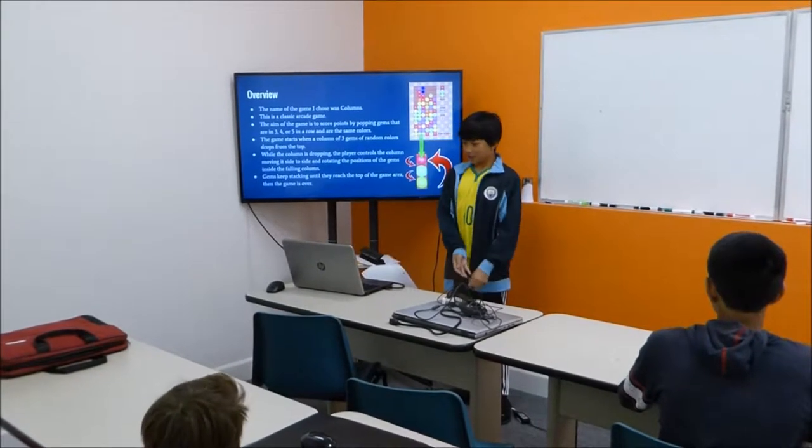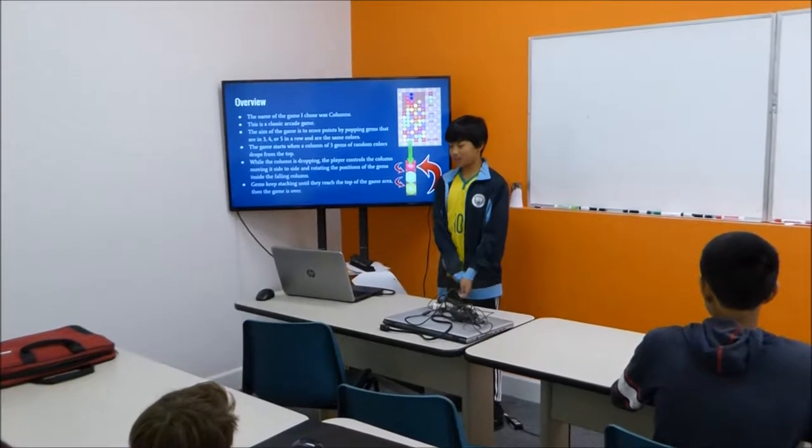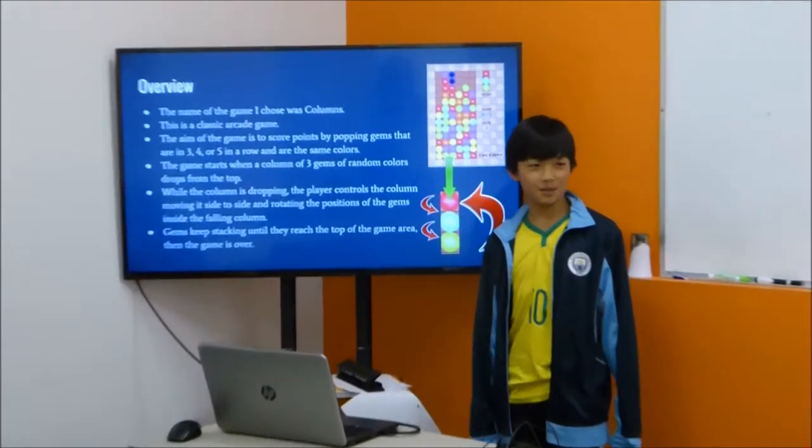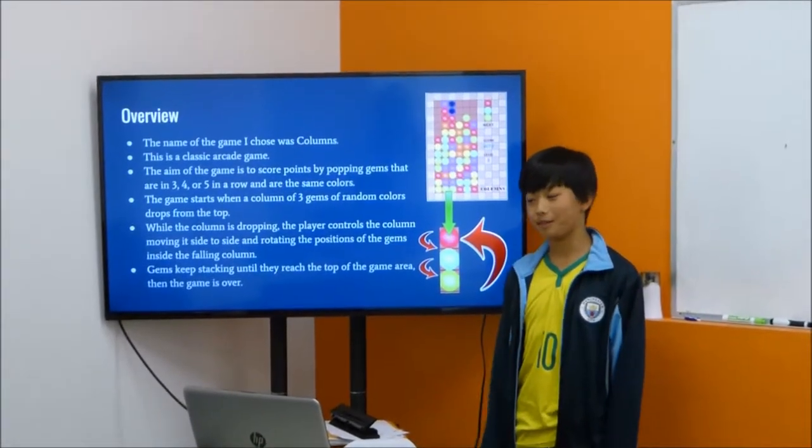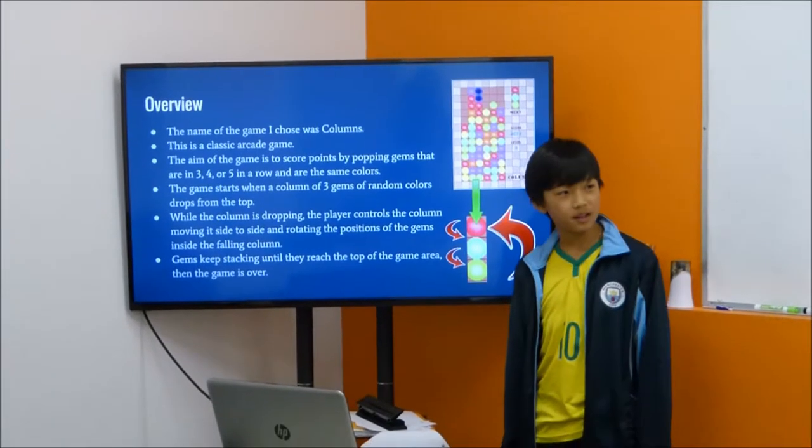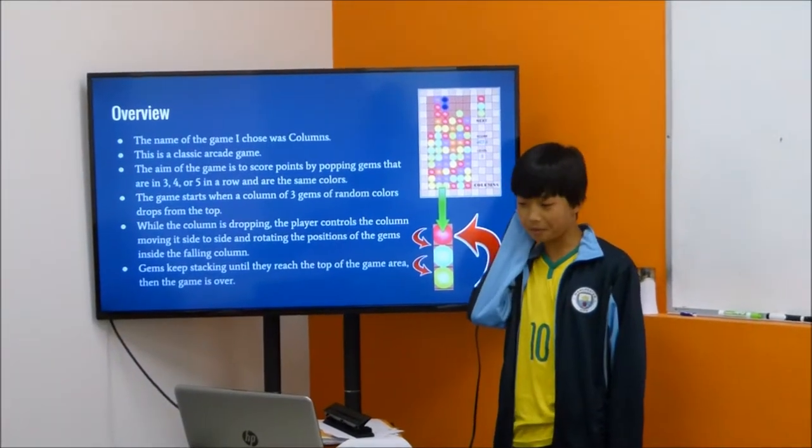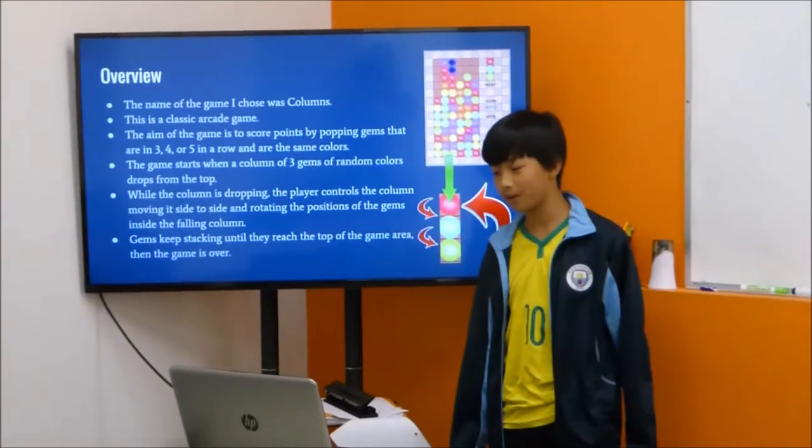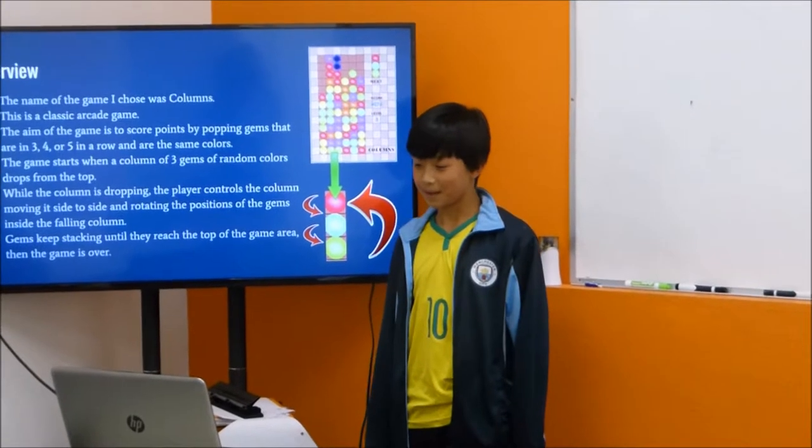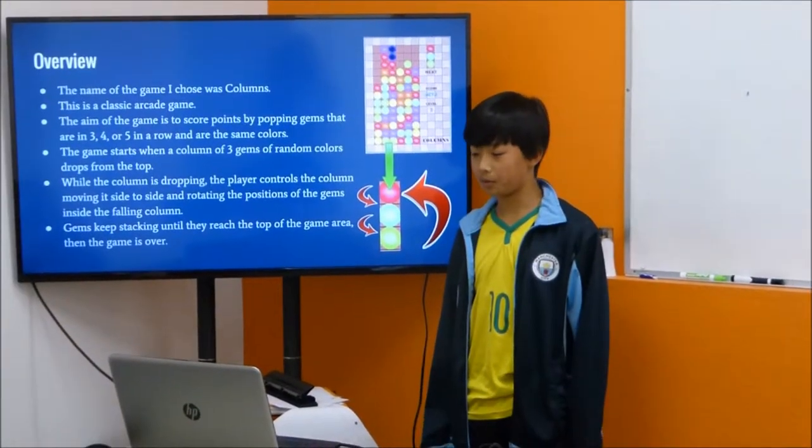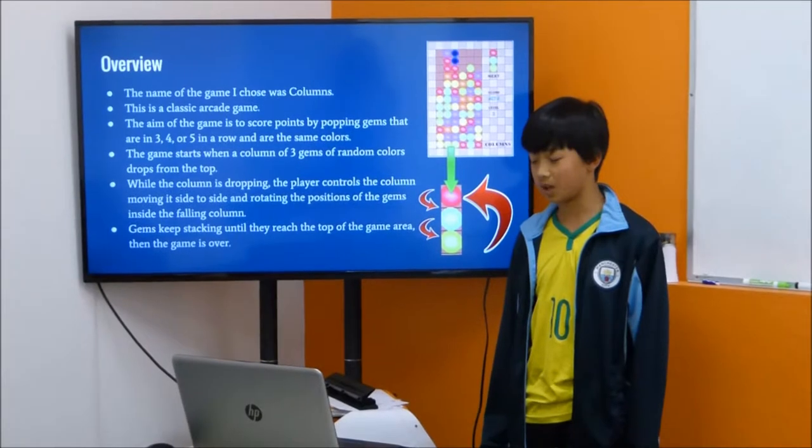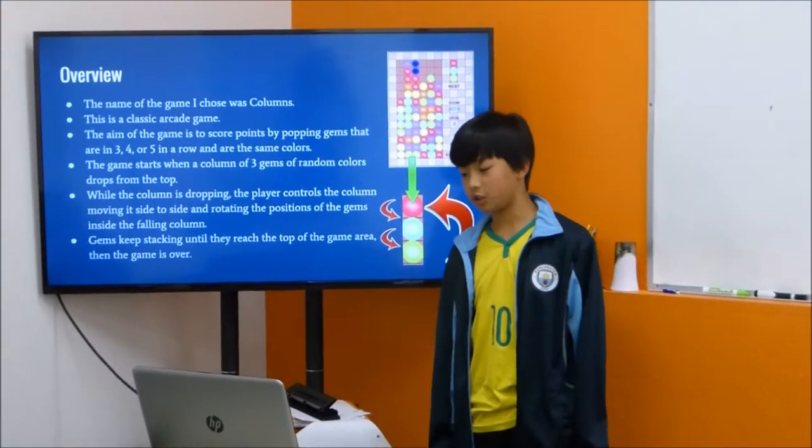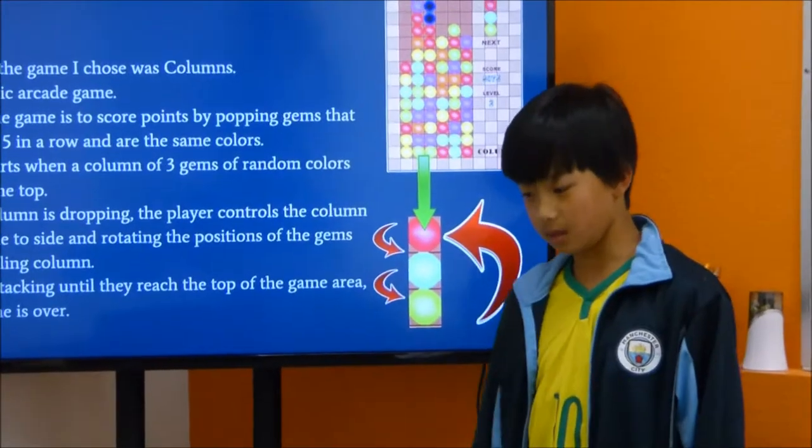The name of the game I chose was Columns, which is a classic arcade game. The goal is to pop gems that are the same color, that are 3, 4, and 5 in a row. The game starts when a column of three gems of random colors is dropped from the top. While the column is dropping, the player controls the column by moving it side to side and rotating the positions of the gems inside the column. The gems keep stacking until they reach the top of the game area, and then the game is over.